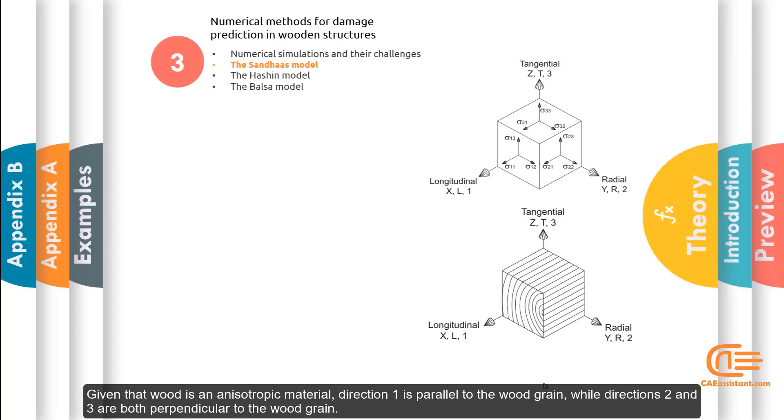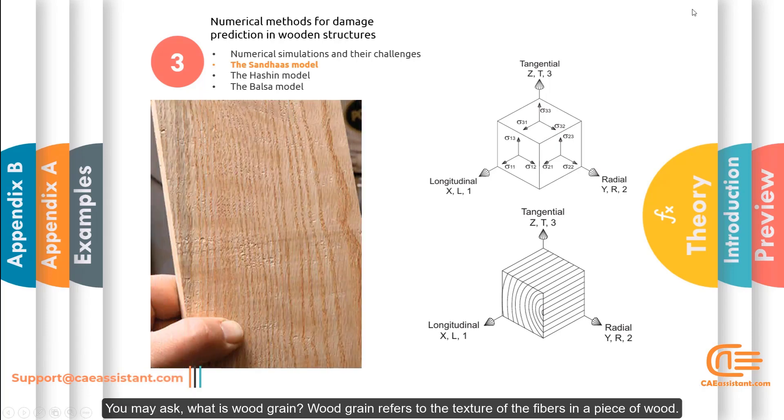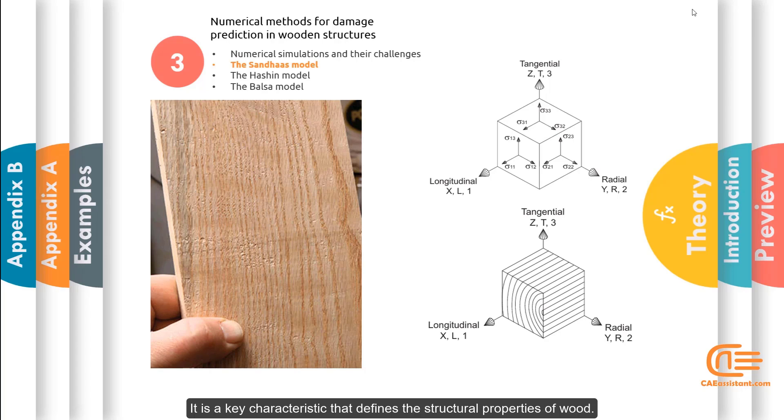Given that wood is an anisotropic material, direction 1 is parallel to the wood grain, while directions 2 and 3 are both perpendicular to the wood grain. You may ask, what is wood grain? Wood grain refers to the texture of the fibers in a piece of wood. It is a key characteristic that defines the structural properties of wood.